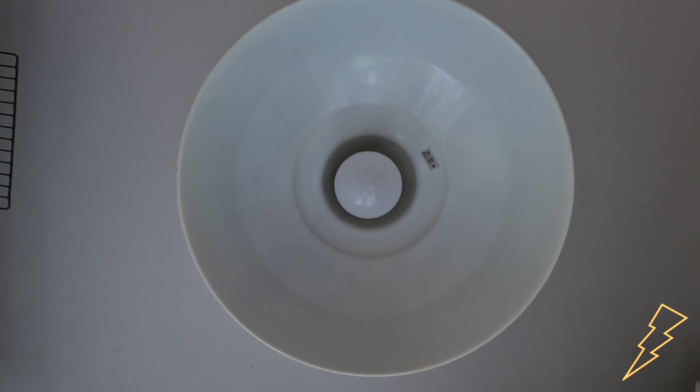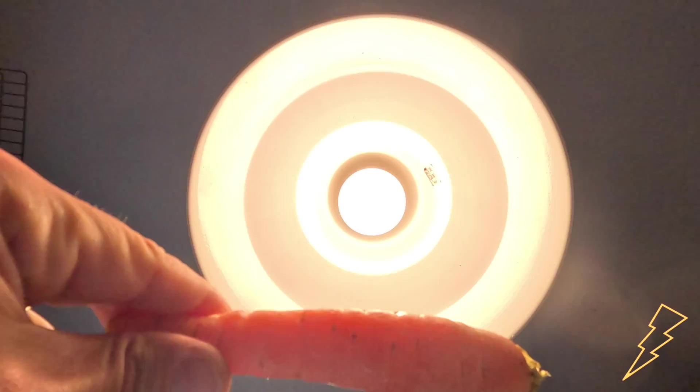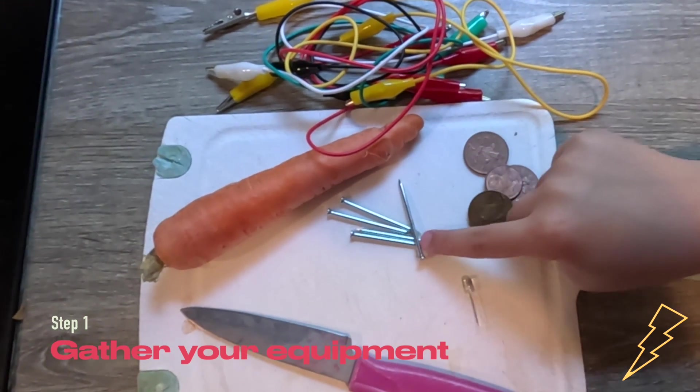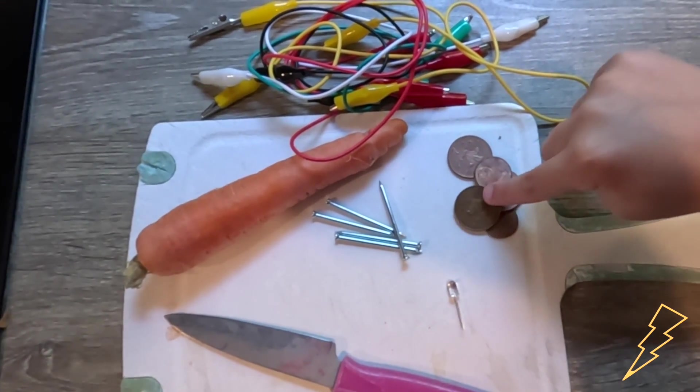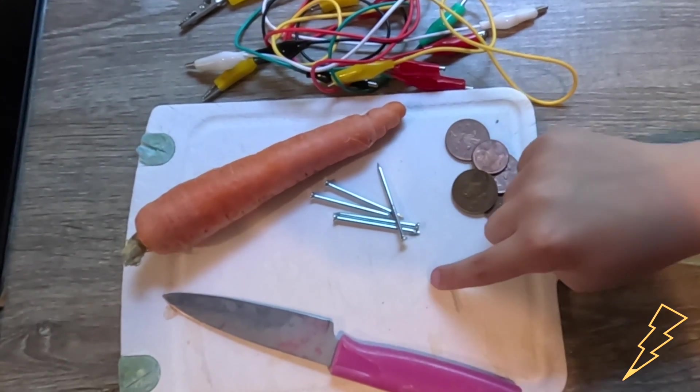In this experiment we're going to use a carrot to light a light bulb. We'll need a carrot, some zinc nails, some copper coins, some wires with alligator clips on the end, and a little light bulb or LED.